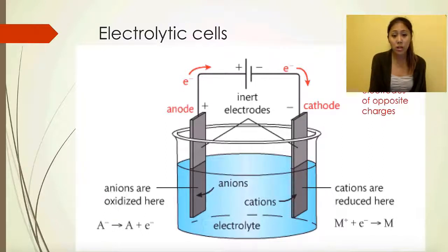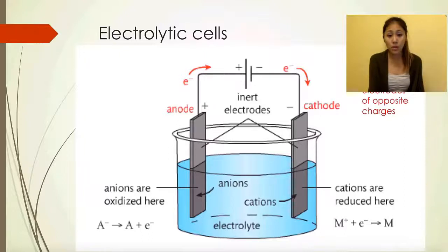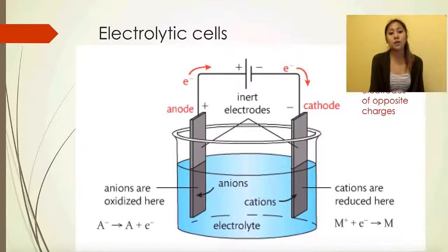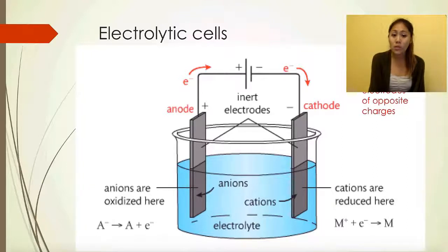One electrode is positive and one is negative. The positive electrode is at the anode — note that in the voltaic cell, the anode had the negative electrode, so in electrolytic it's swapped: anode is the positive electrode, cathode is the negative electrode. Anions flow toward the anode and cations flow toward the cathode — anions to anode, cations to cathode.